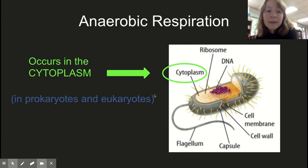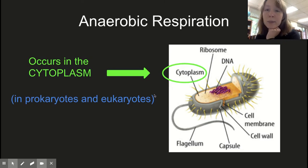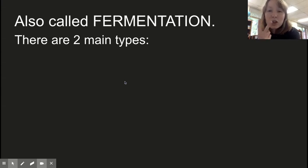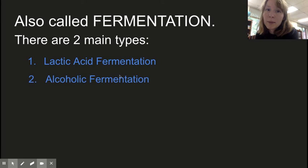This can occur in both prokaryotes and eukaryotes — you also sometimes have anaerobic respiration happening in your own cells. Anaerobic respiration can also be called fermentation, and there are two main types: lactic acid fermentation and alcoholic fermentation.